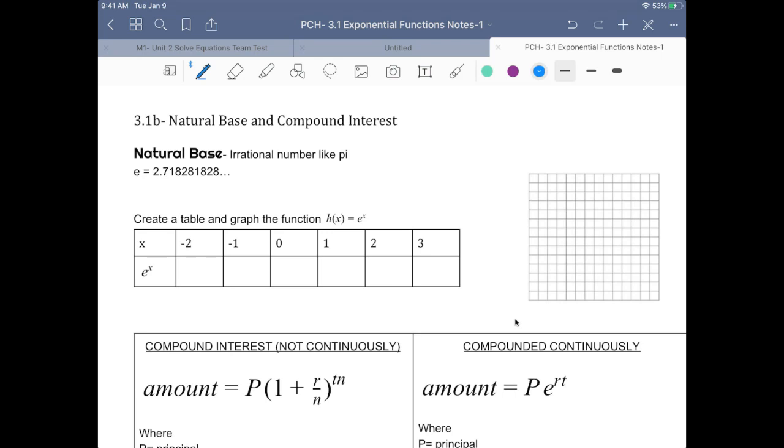All right, we're looking at the natural base and compound interest. So like we learned about in class today, the natural base is just an irrational number like pi. The value of e is about 2.718. This is not as straightforward to graph, but we're going to do so anyway.